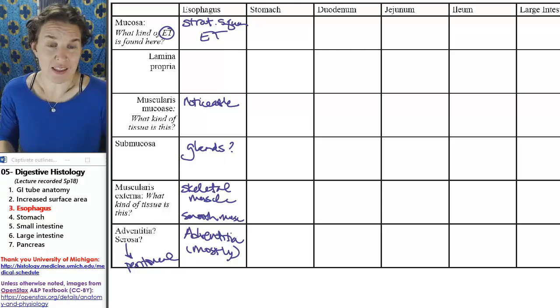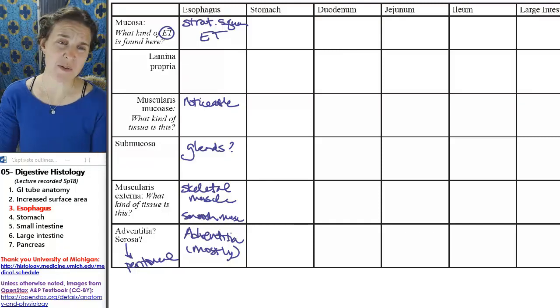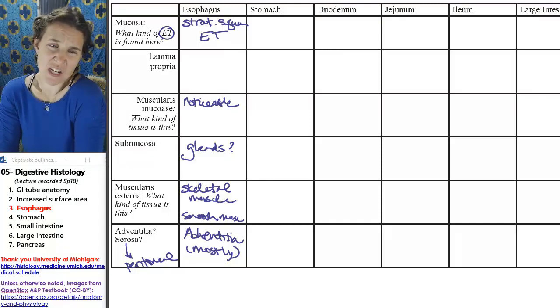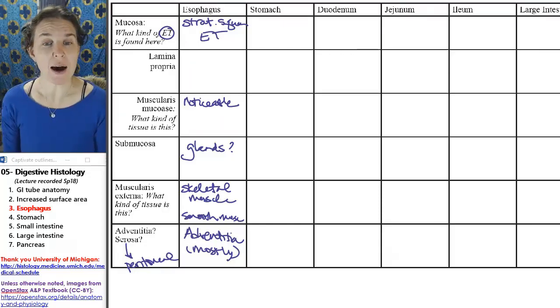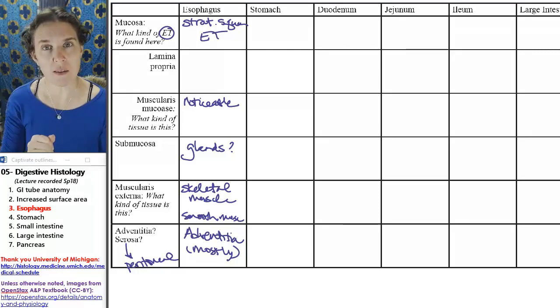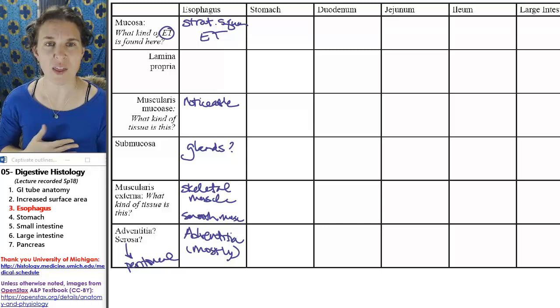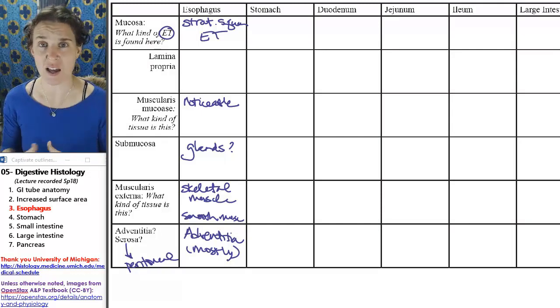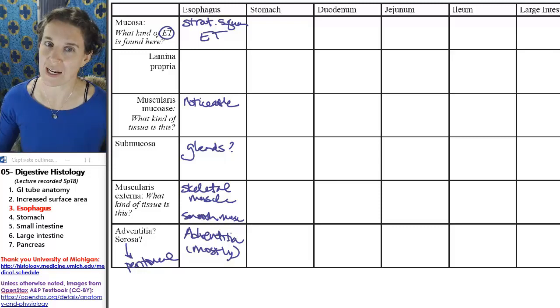I didn't put anything in the lamina propria because there's nothing unique or interesting. I probably could have skipped the submucosa too. Knowing that it's adventitia, that's a good thing to know. That tells me this is not going to be found in the peritoneal cavity. And like I said, stratified squamous epithelium, that's your go-to.